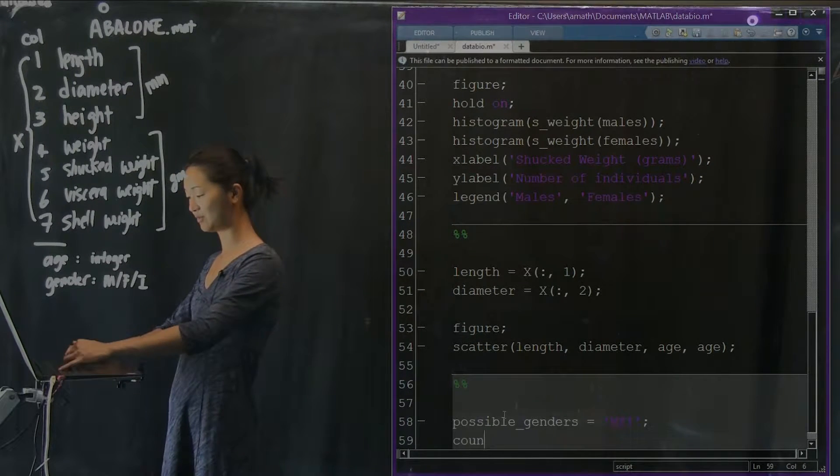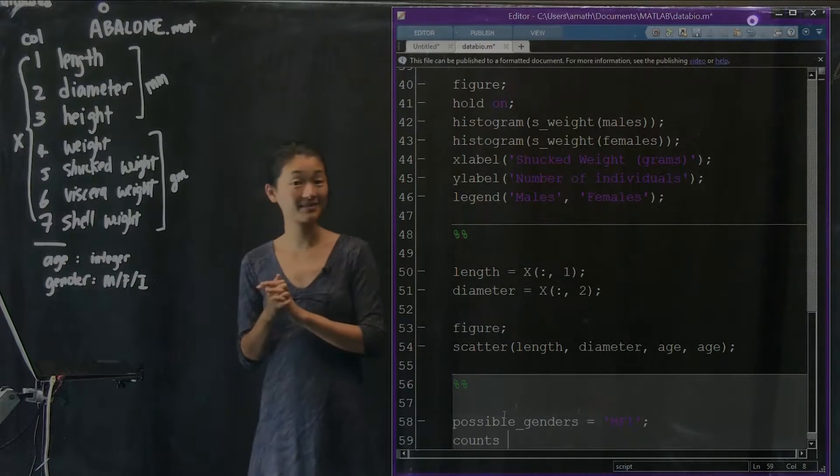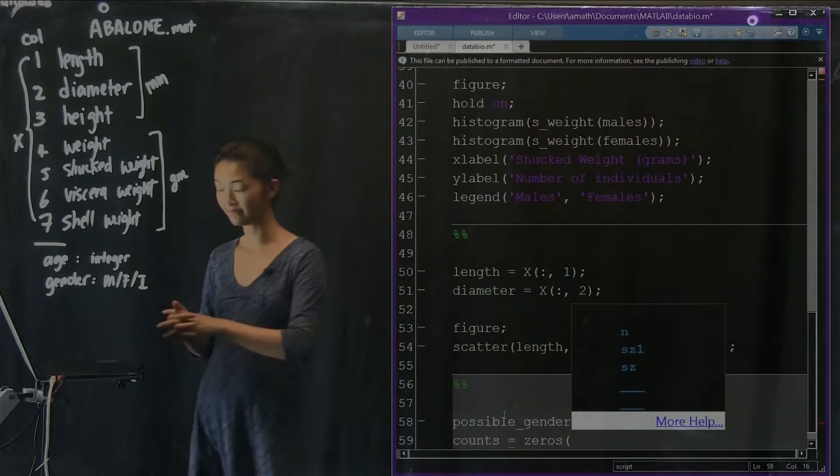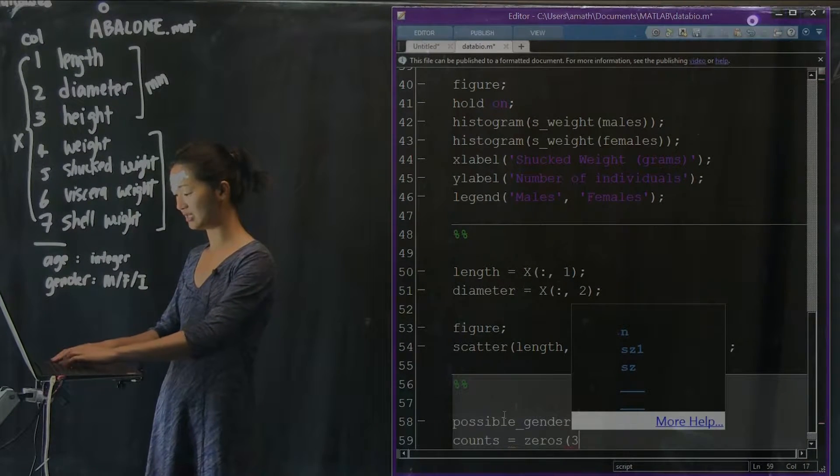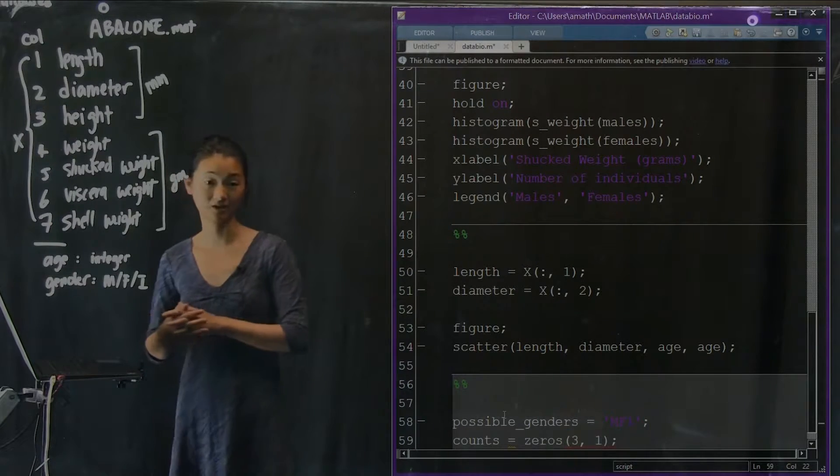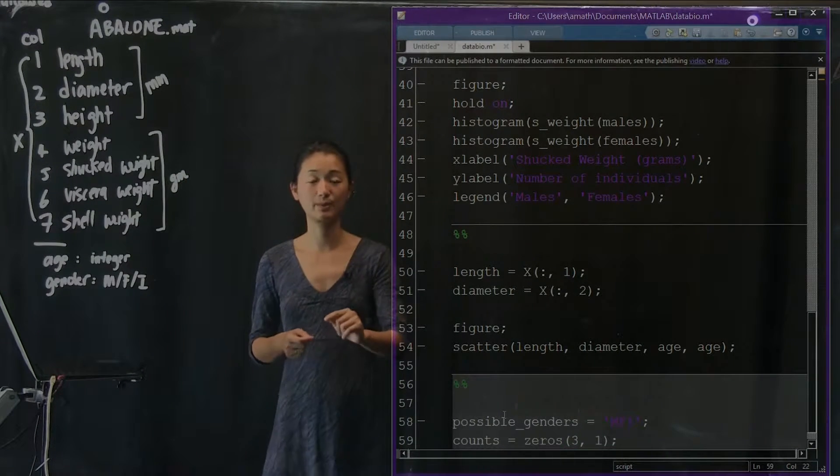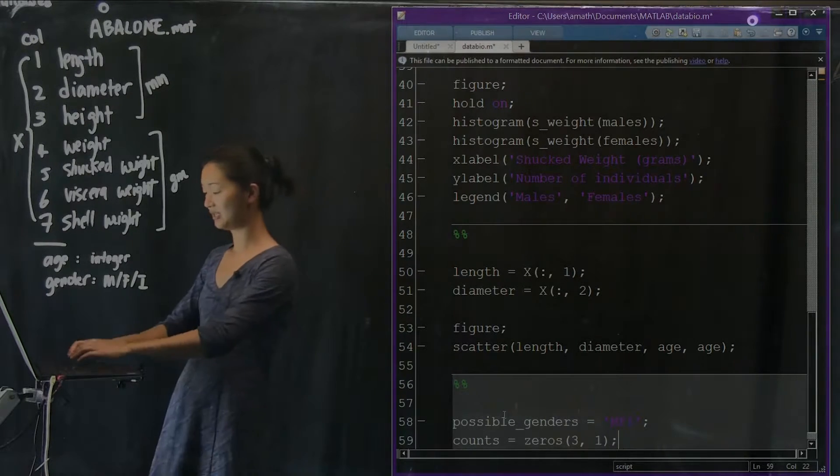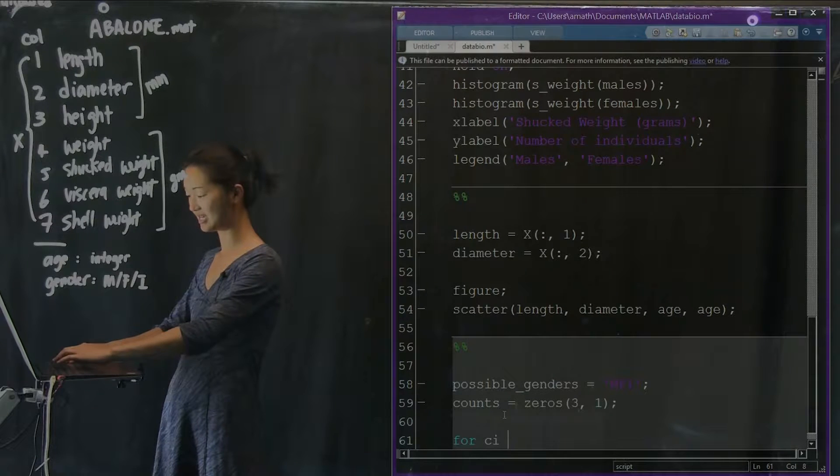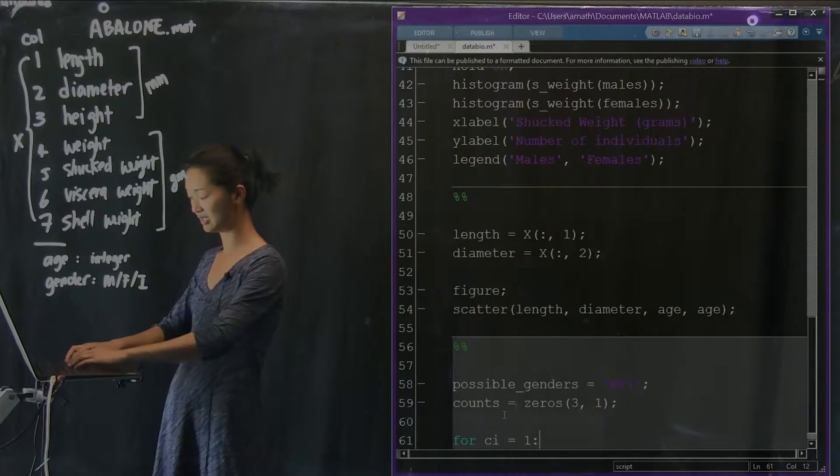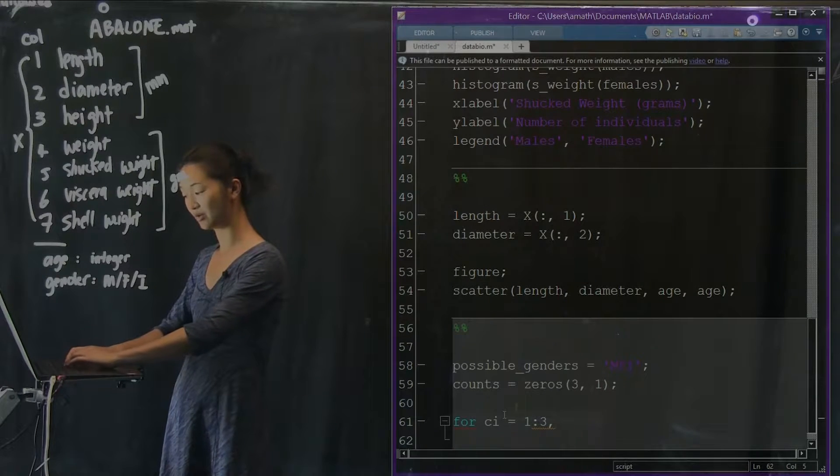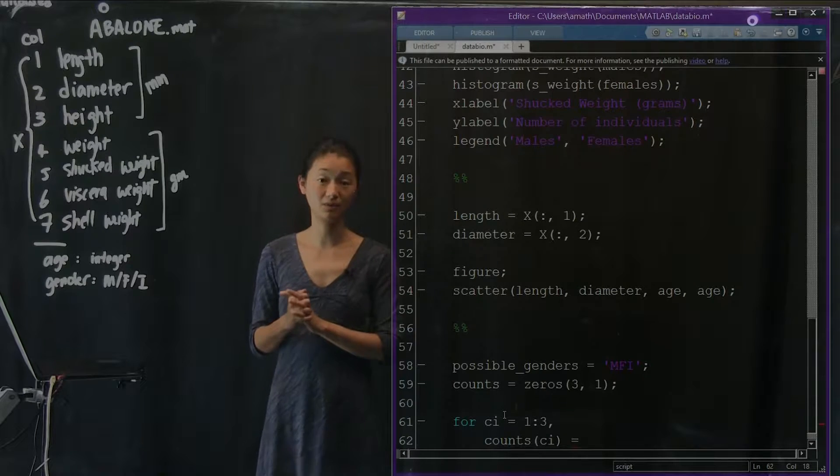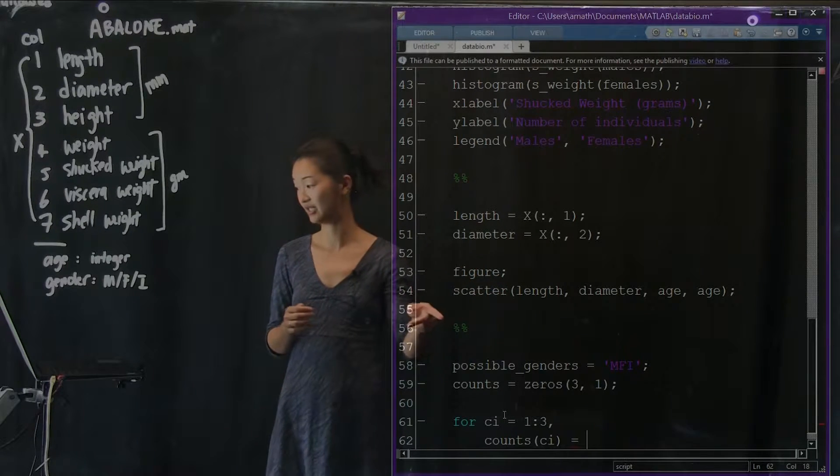Then I'm going to make a counts vector that I'm going to initialize with zeros. It's going to be a 3 by 1 vector, where each element corresponds to the number of counts of that possible gender in the data set. I'm going to make a for loop for ci equals 1 to 3. We're going to populate counts with the number of individuals that correspond to that particular gender in our data set.